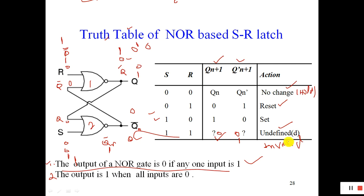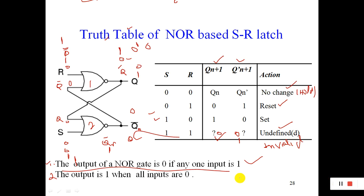It will be an Invalid condition. So guys, that was all about the NOR-based SR latch. You saw how easy this is if you have the basic fundamentals. If you remember the truth table of the NOR gate, you can apply that fundamental to analyze the RS latch.